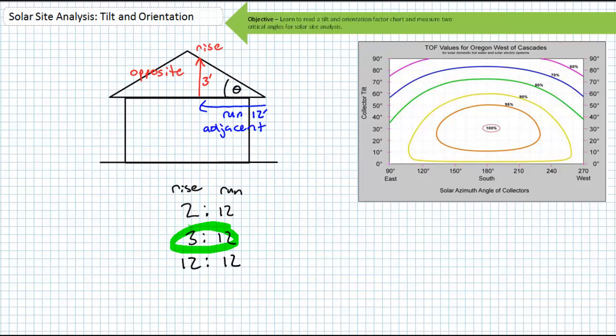Obviously it's a lot more accurate at the 12 foot measurement, but either way the slope is constant throughout the roof.